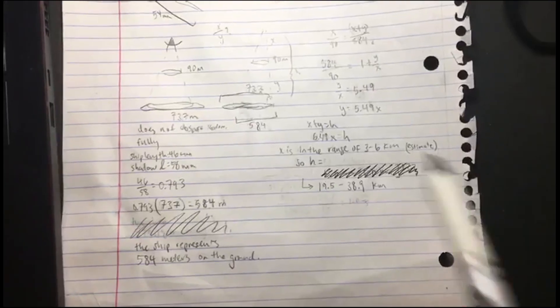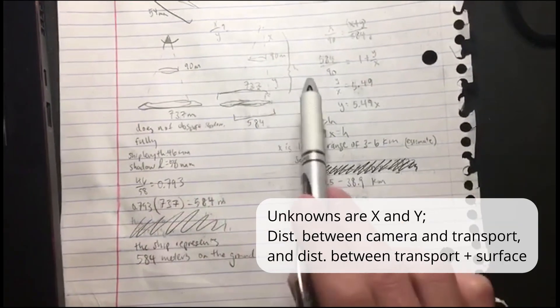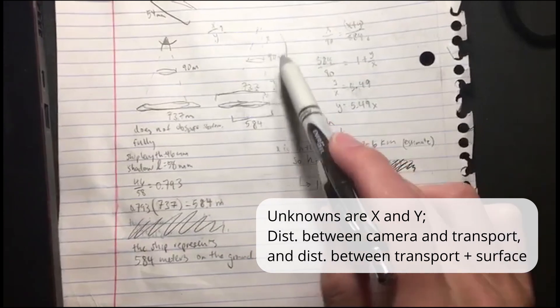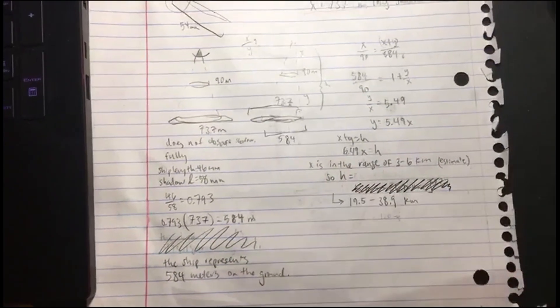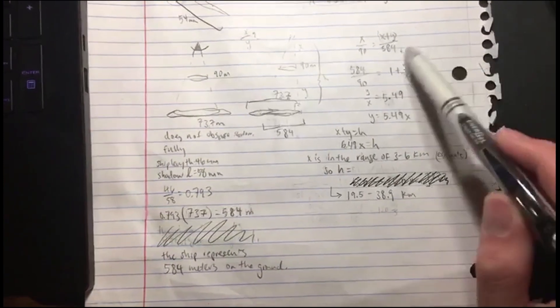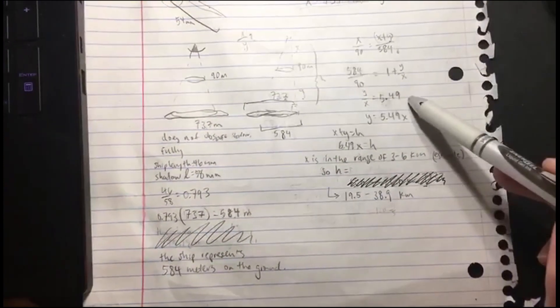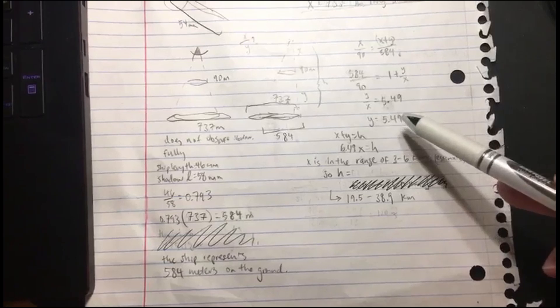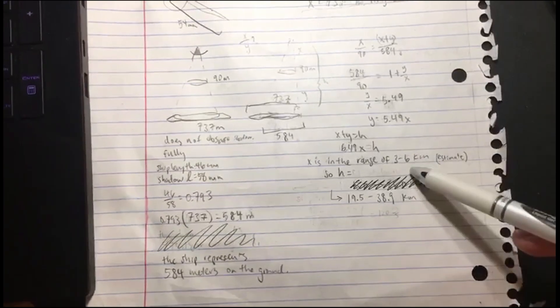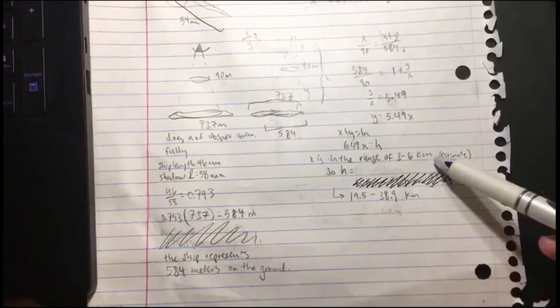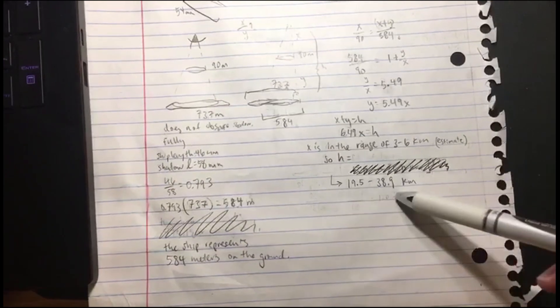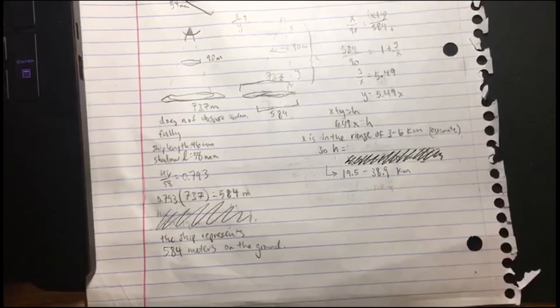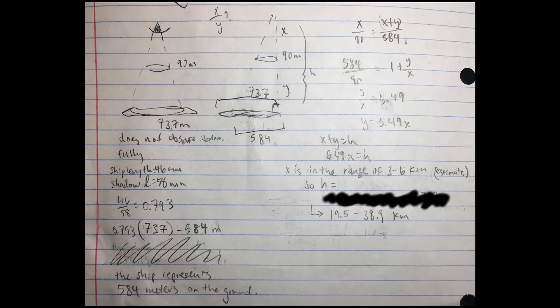I again constructed two similar right triangles, with the unknowns being the distances between the camera and the transport, and the knowns being the relative lengths of the shadow and transport. I solved the similar triangles using proportional fractions, and after roughly estimating the distance between the camera and the 90 meter transport as between 3 to 6 kilometers, I obtained an altitude of somewhere between 19.5 and 38.9 kilometers, which arguably is a large range, but I could only do so much with the very small amount of information provided.